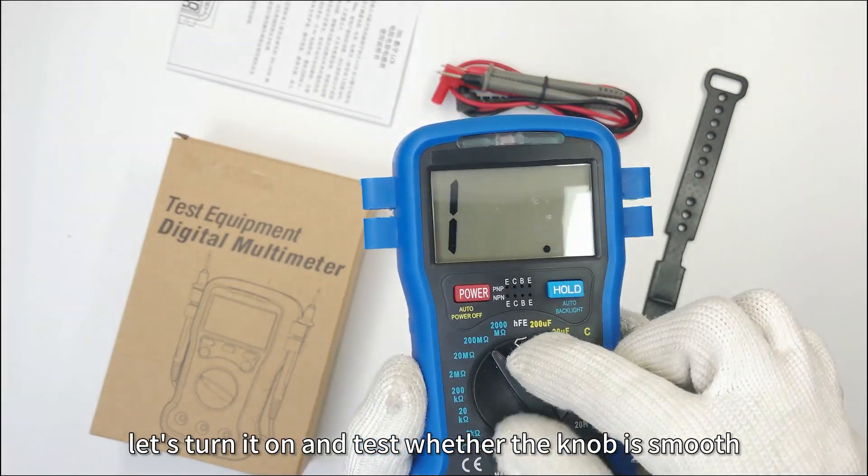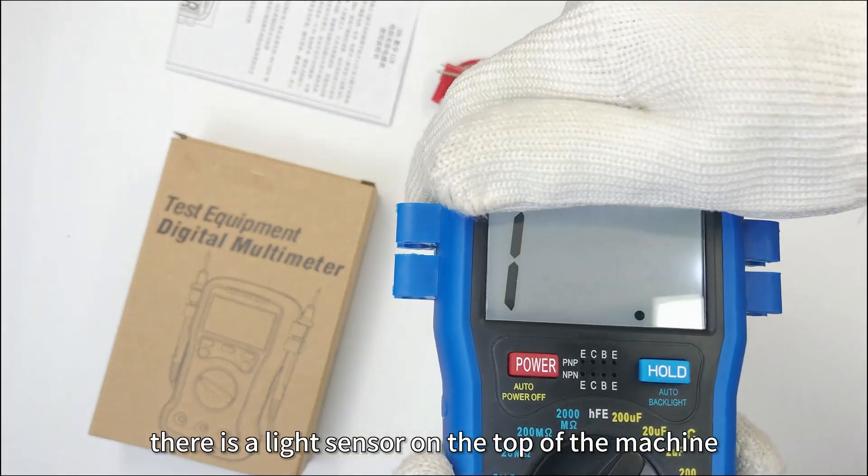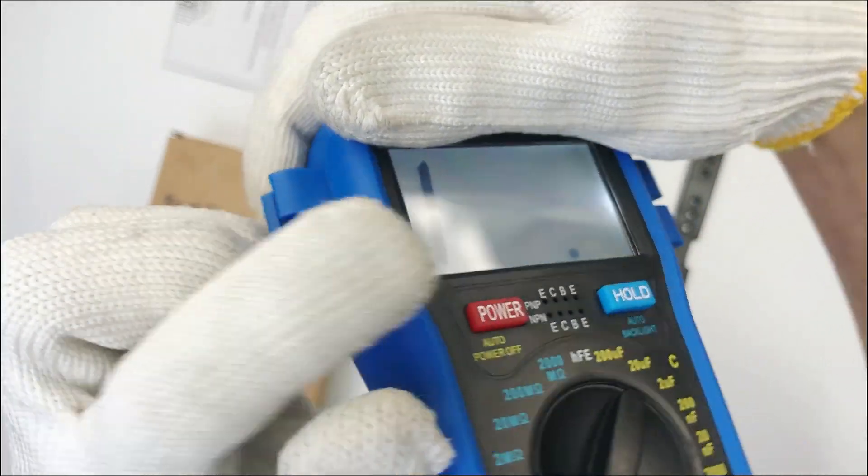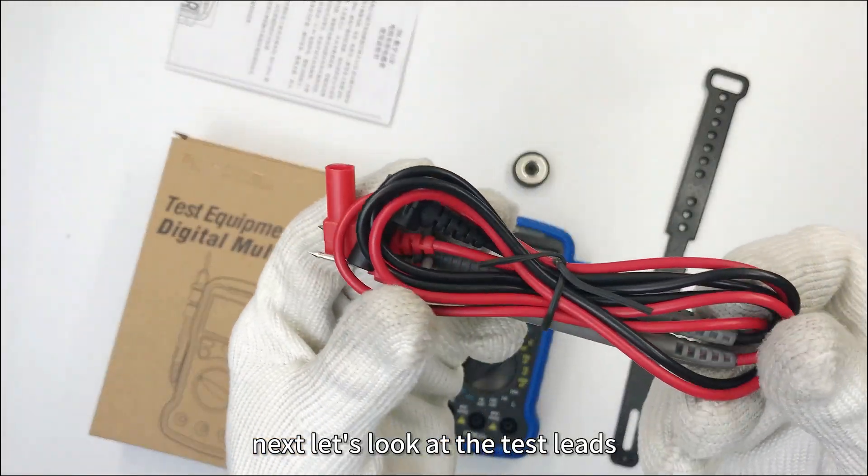First of all, let's turn it on and test whether the knob is smooth. There is a light sensor on the top of the machine and the screen will light up when the surrounding is dark.